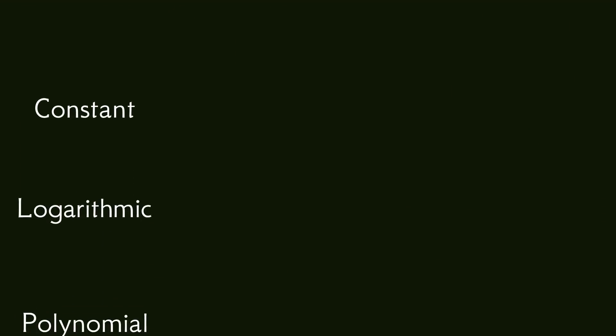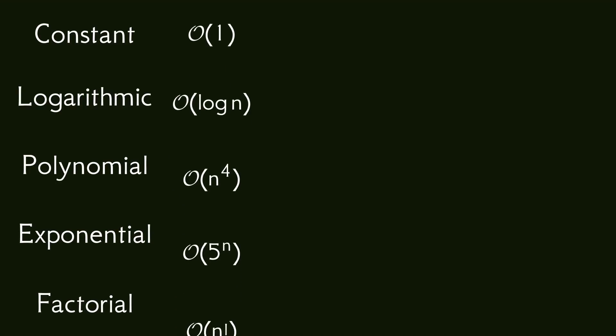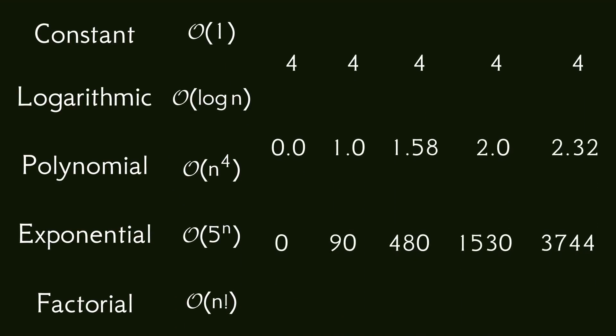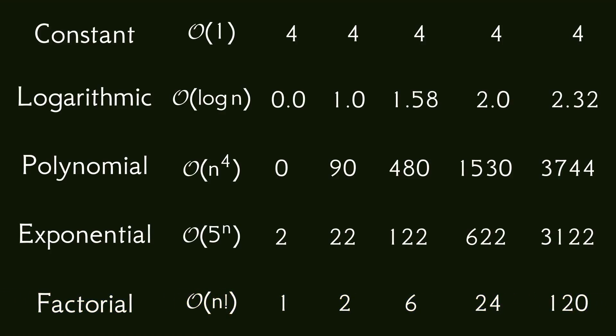There are of course many more types of growth rates that a sequence can have. Two other common examples are the factorial, which grows even faster than exponentials, and logarithmic sequences, which grow faster than constants but slower than any polynomial of order greater than zero. It should also be noted that while this video has used whole numbers exclusively, everything still applies when the sequences are made up of fractions. In fact, the order of the polynomials and the base of the exponentials don't need to be whole numbers either.